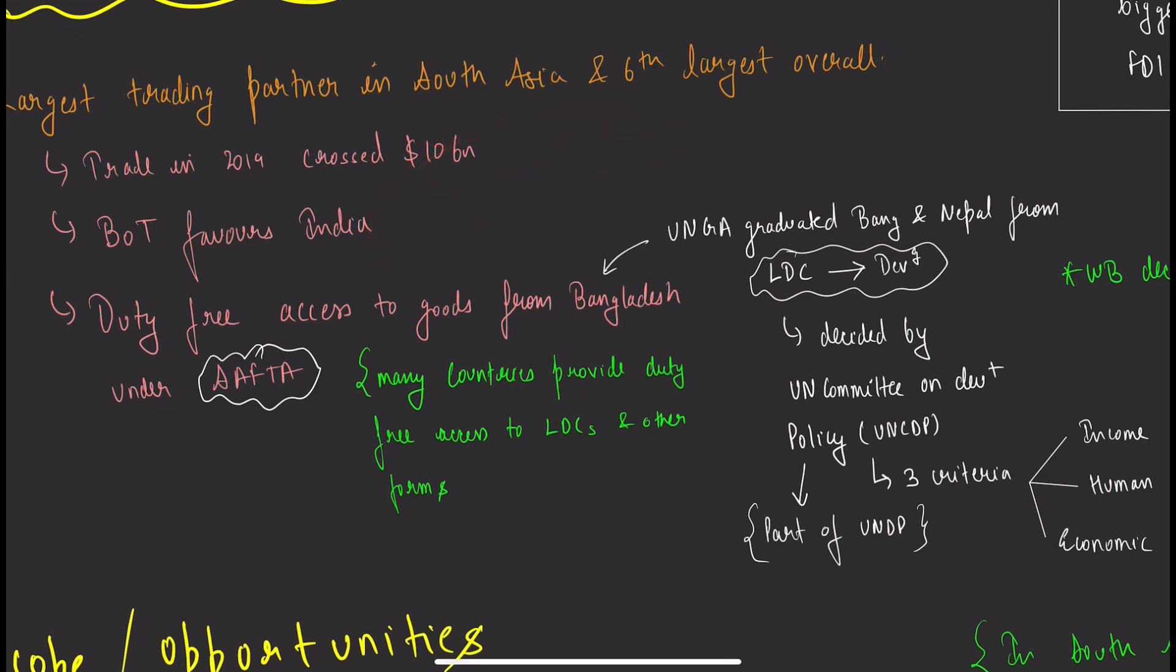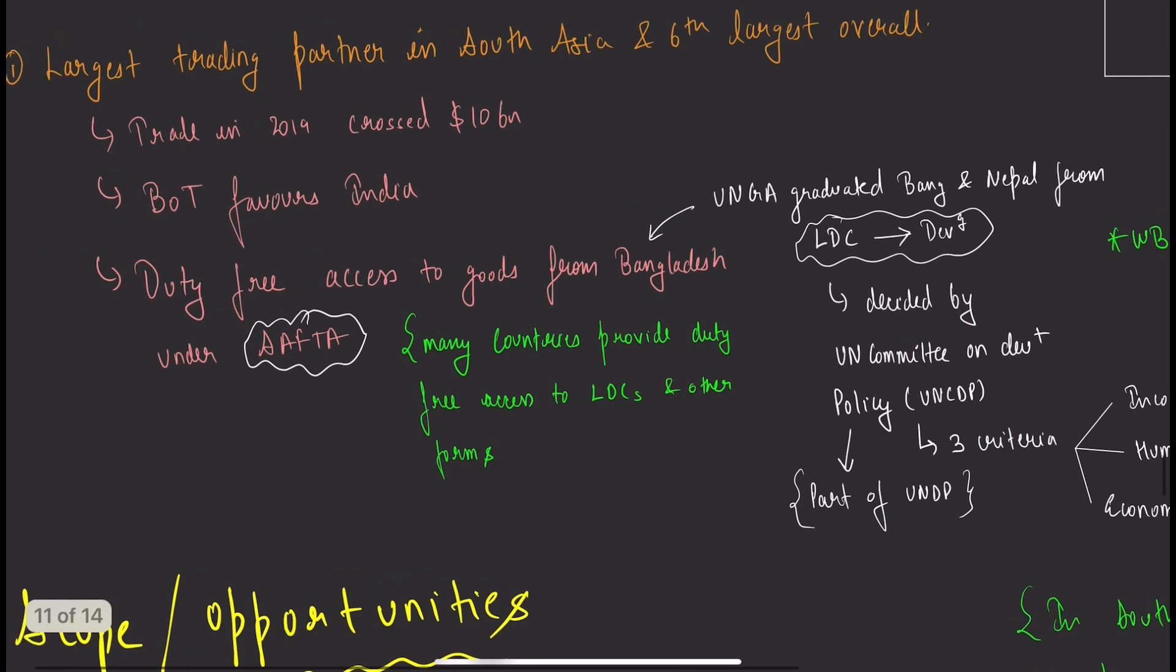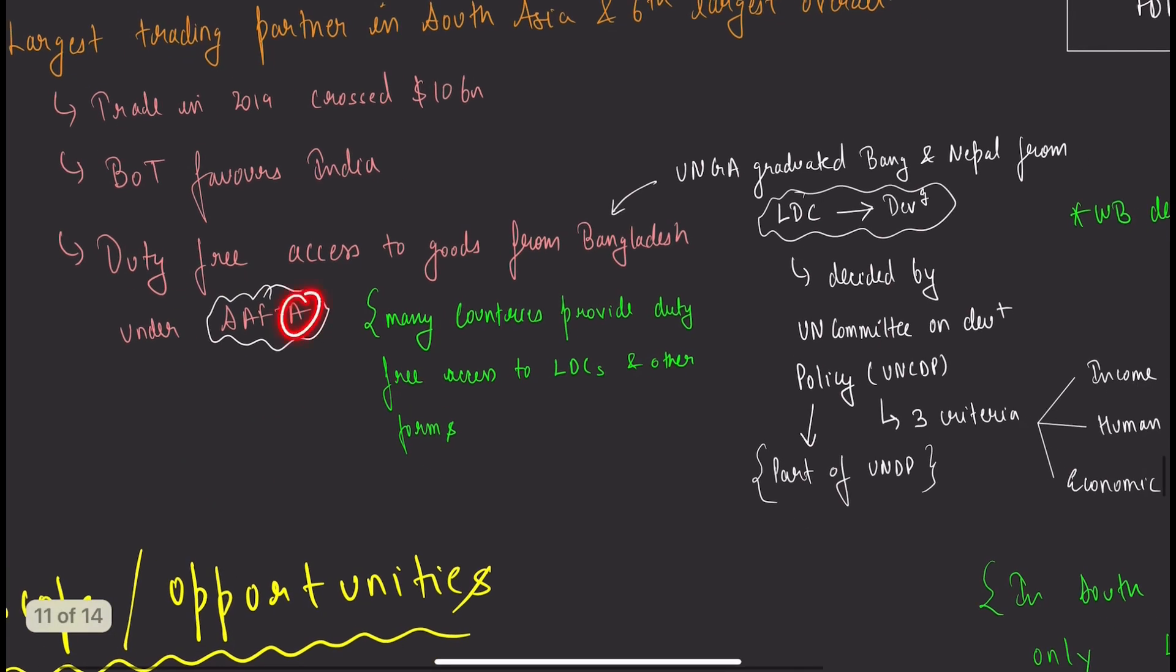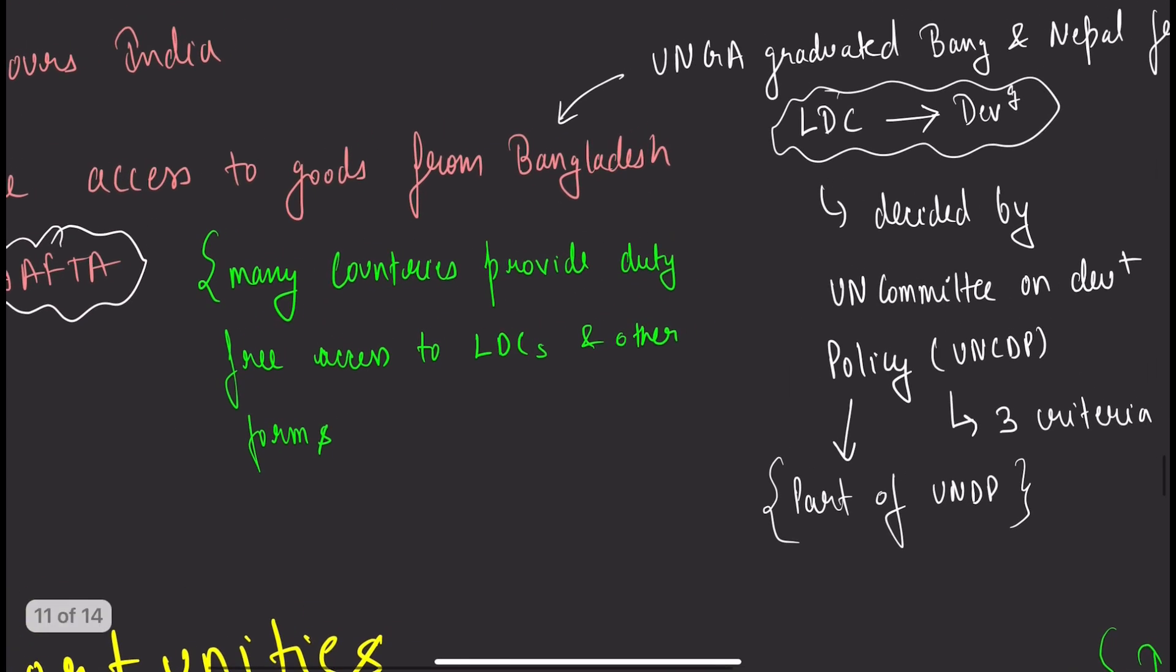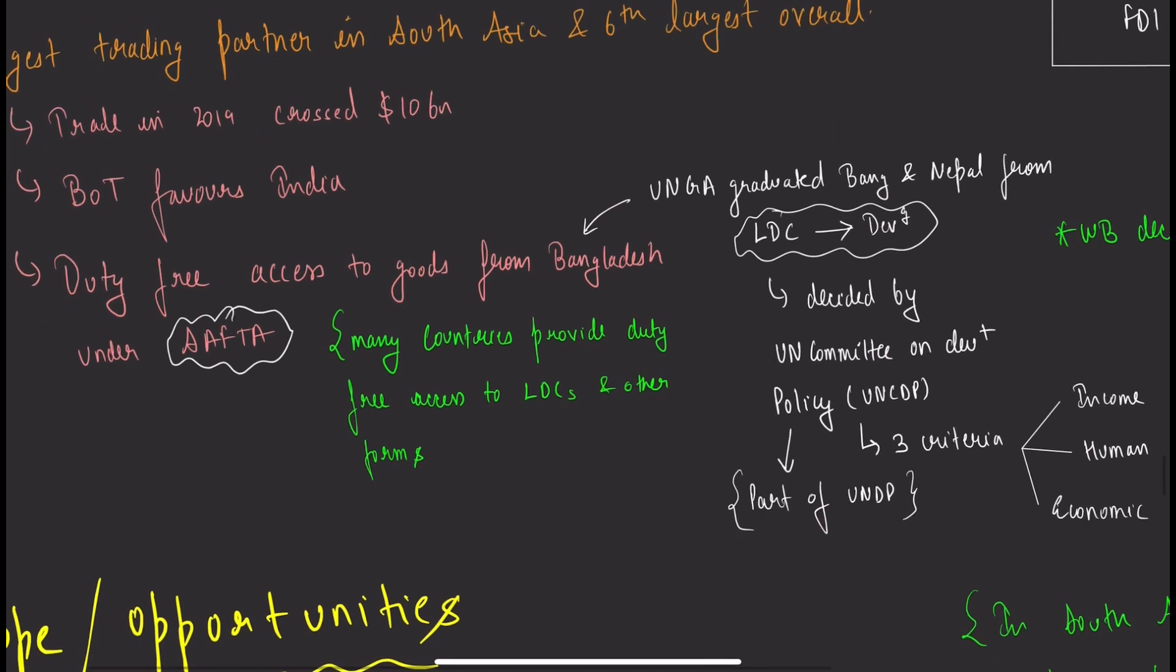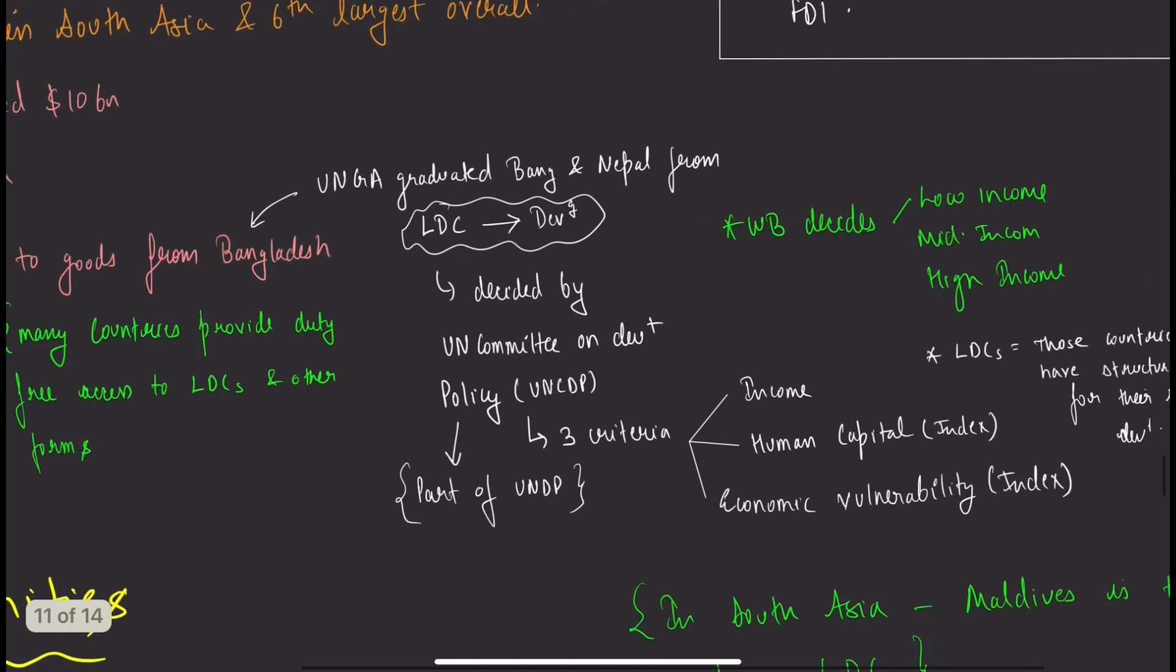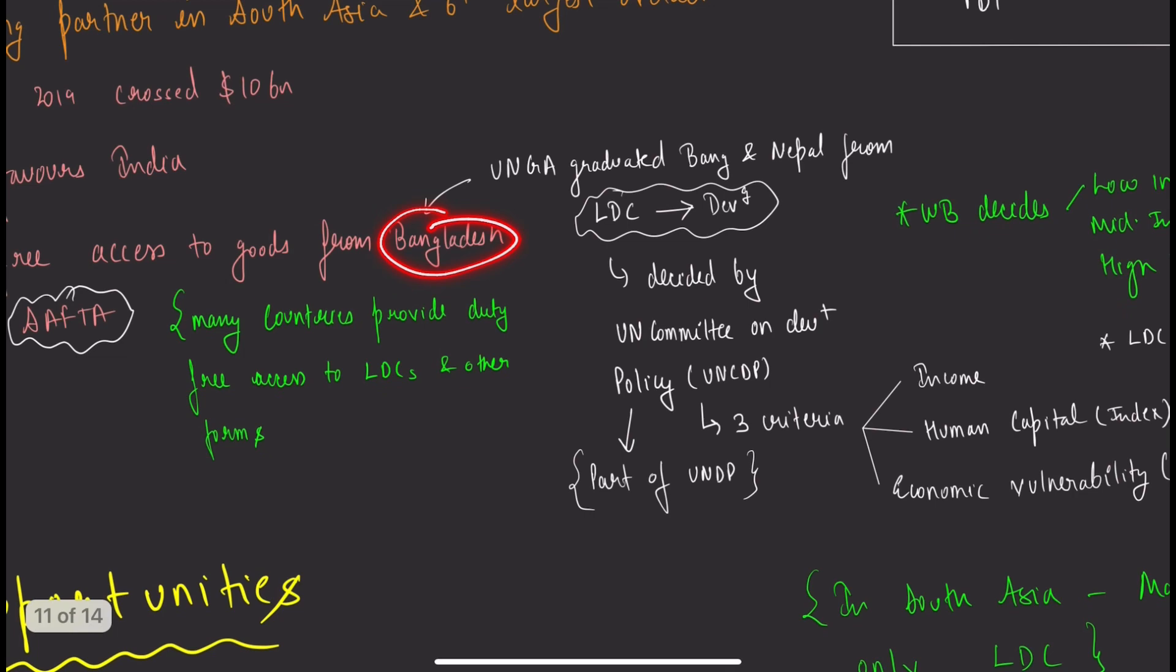Moving to economic relations. We are the largest trading partner in South Asia and sixth largest overall. Trade in 2019 crossed 10 billion dollars. Balance of trade favors India. We provide duty-free access to goods from Bangladesh under SAFTA—South Asia Free Trade Area agreement.